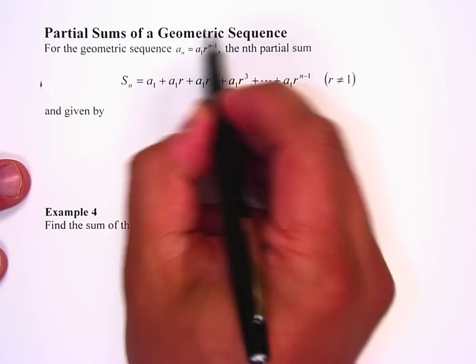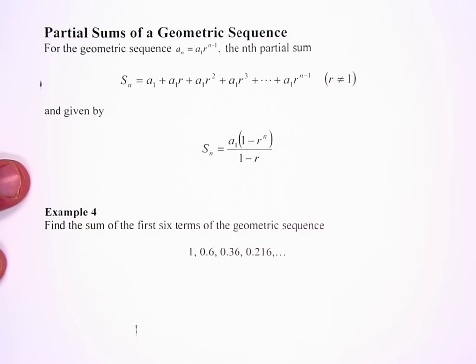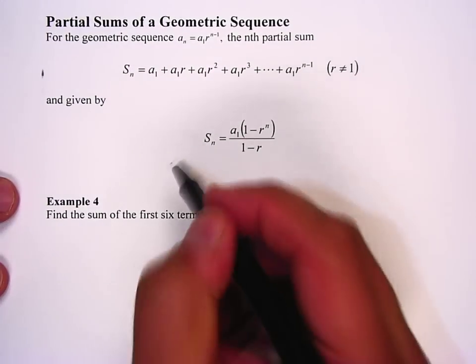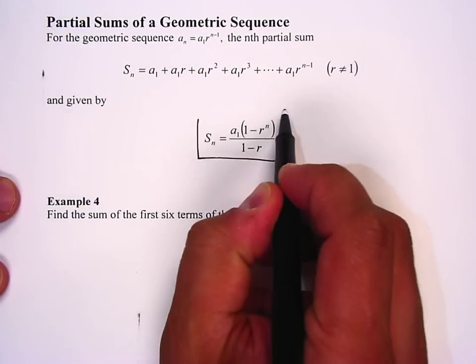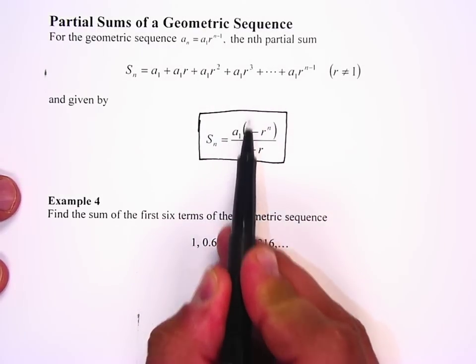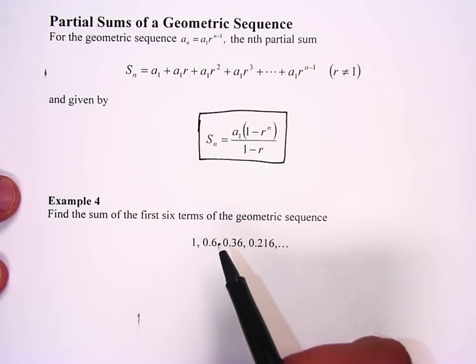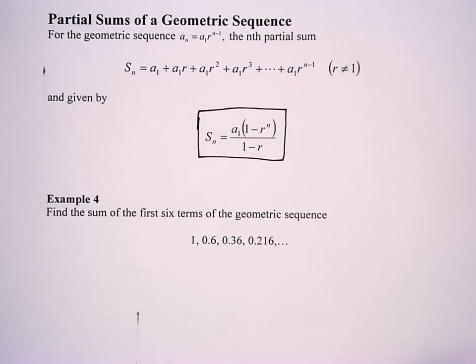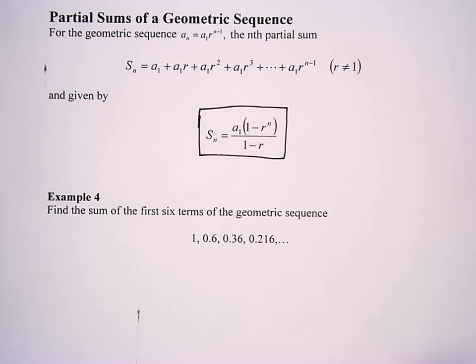As long as we have this geometric sequence we would have the nth partial sum and we use this formula: the nth partial sum is equal to the first term times the quantity (1 - r^n) all over (1 - r). So as long as you know that formula, a sub 1 and r and n, we can figure things out.